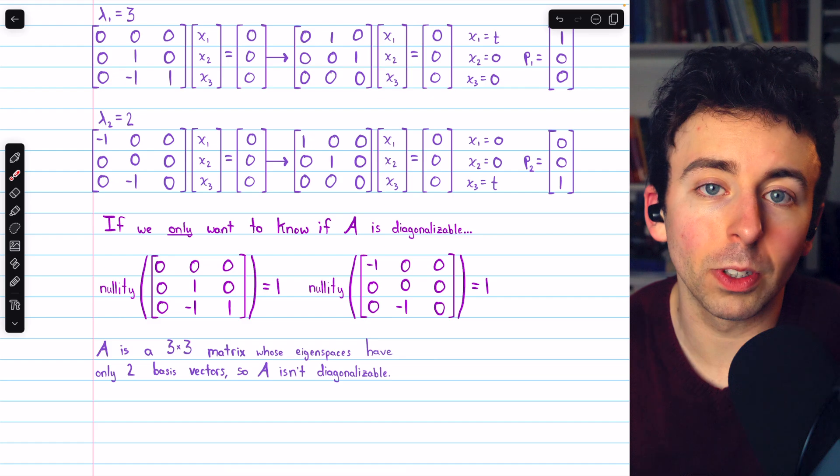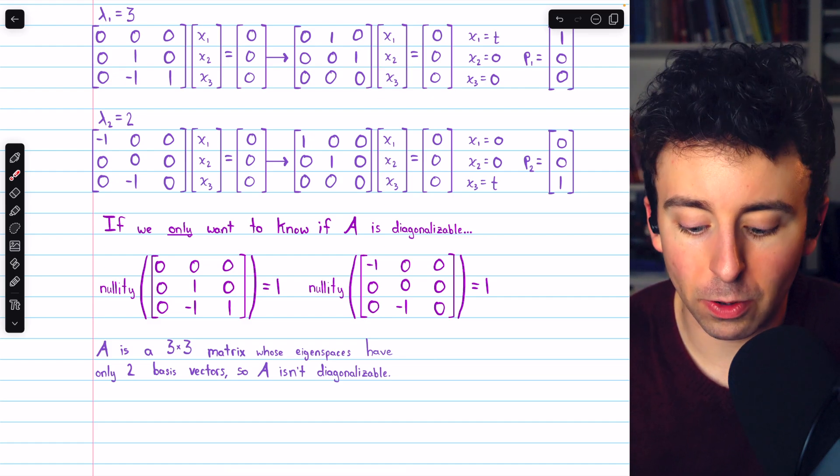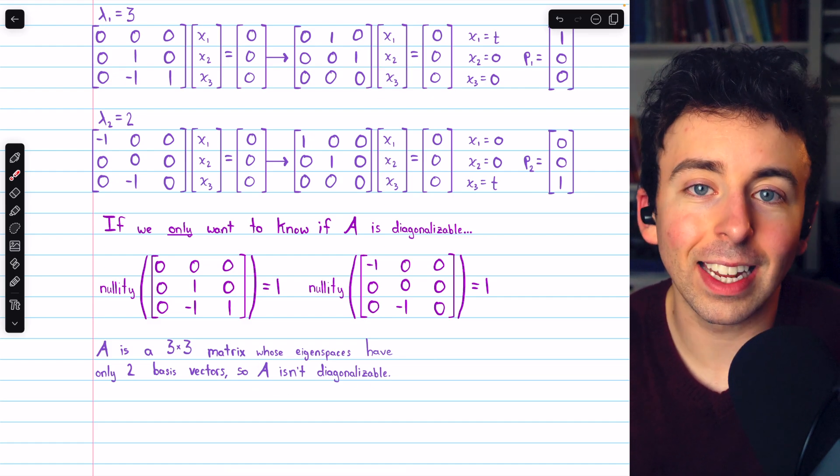That is, only two linearly independent eigenvectors for this matrix. Hence, A is not diagonalizable.